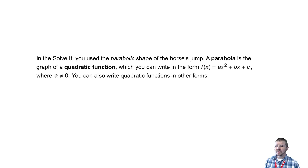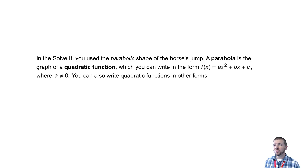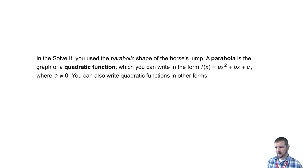In the Solve-It, you use the parabolic shape of the horse's jump. A parabola is the graph of a quadratic function, which you can write in the form f of x equals ax squared plus bx plus c, where a does not equal zero.